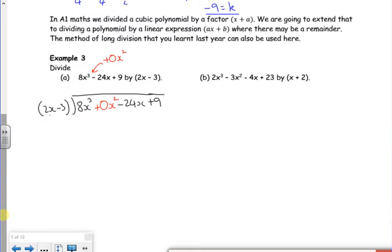So how many times does 2x go into 8x cubed? That's 4x squared. 4x squared times by the factor. So 4x squared times by 2x minus 3 is 8x cubed minus 12x squared. If I do top take bottom, 8x cubed take 8x cubed is nothing. No lots of x squared minus and minus 12 lots of x squared gives me a plus 12 lots of x squared. Please be careful with the signs.